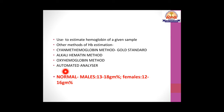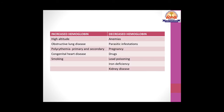Other hemoglobin estimation methods include acid hematin, oxyhemoglobin, and the commonly used automated analyzer method. Normal hemoglobin range: males 13–18 g/dL, females 12–16 g/dL. Increased hemoglobin is seen in high altitude, obstructive lung disease, primary and secondary polycythemia, congenital heart disease with hypoxia, and smoking. Decreased hemoglobin is seen in anemias, parasitic infestations, pregnancy (hemodilution), drugs, lead poisoning, iron deficiency, and kidney disease, as the kidney is a source of erythropoietin.